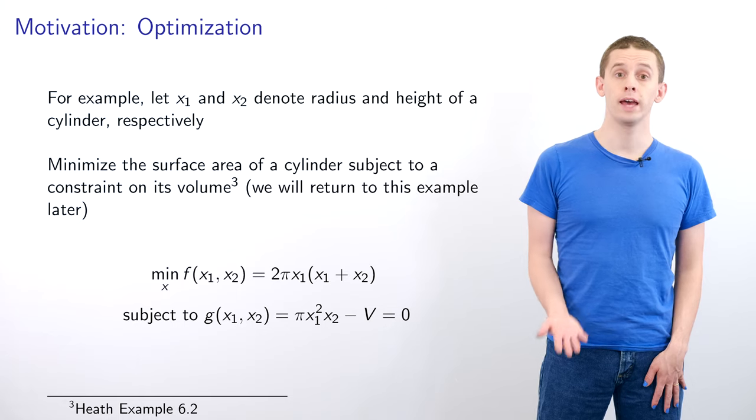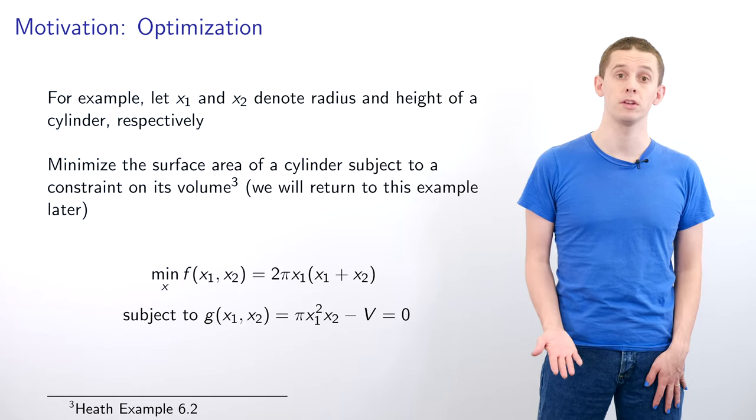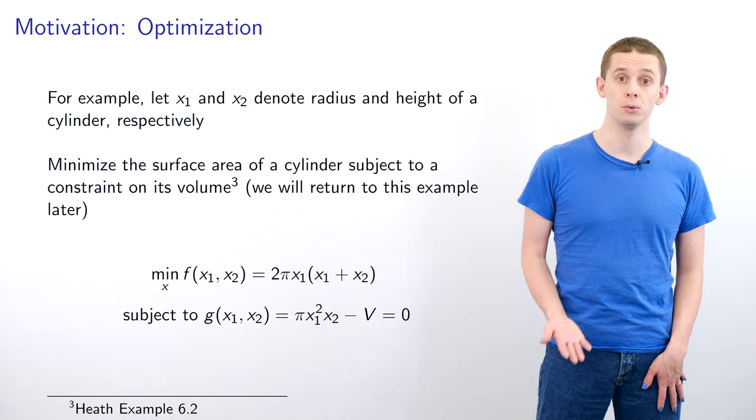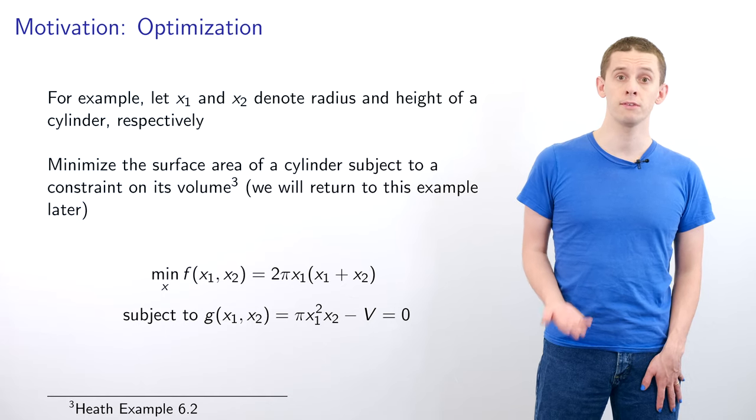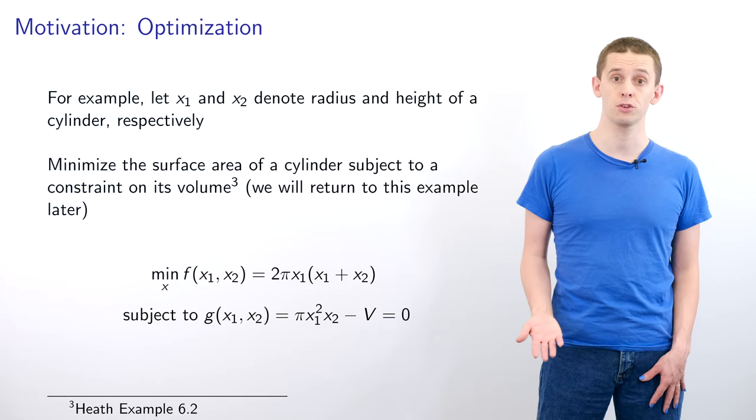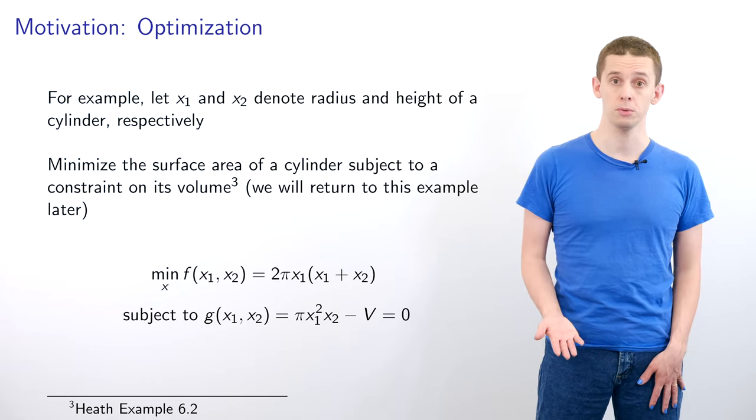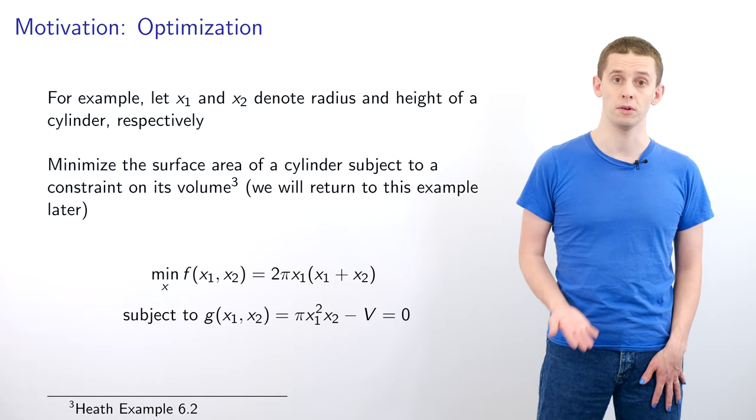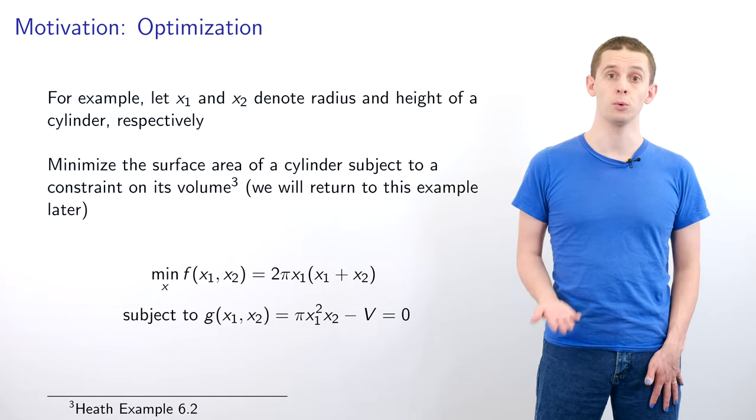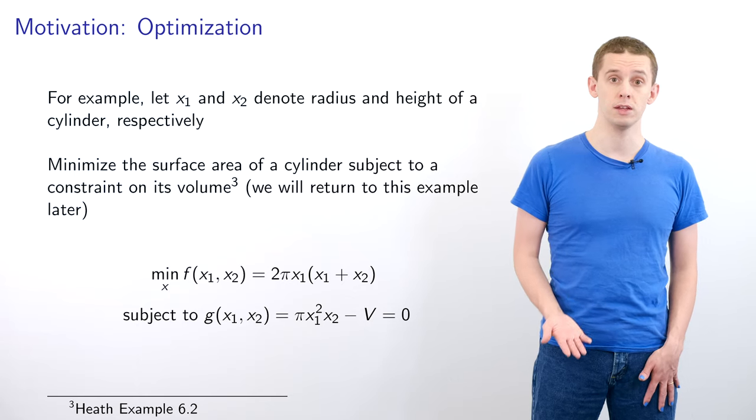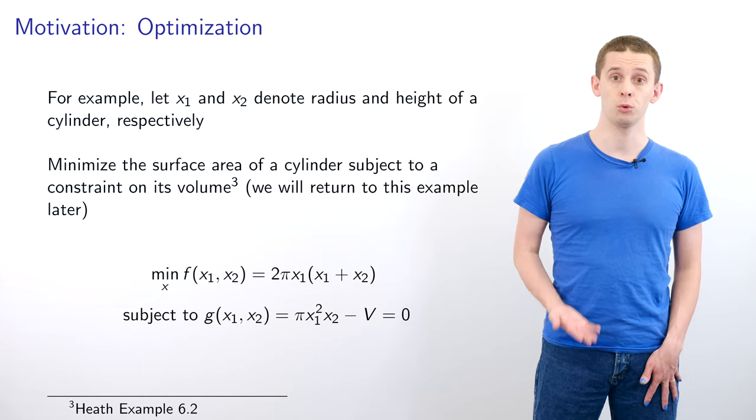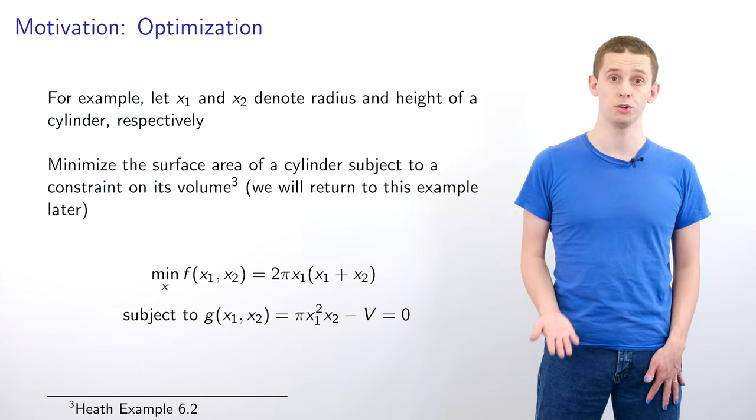As an example let x1 and x2 be the radius and height of a cylinder respectively. And we might want to minimize the surface area of this cylinder subject to a constraint on its volume. And therefore we want to minimize the function f of x1 and x2 that's equal to 2 times pi times x1 times x1 plus x2 subject to the constraint that g of x1 and x2 which is equal to pi times x1 squared times x2 minus v is equal to 0 where v is the volume of the cylinder. And we'll return to this example in this unit and we'll show how we can solve this using Lagrange multipliers.